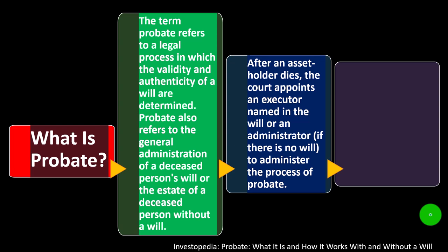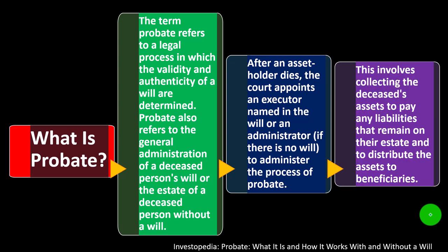If there is a will and you go through the probate court process, they determine the will is legitimate and give authority to the executor named within it. But if there is no will, the court still assigns an administrator to go through the necessary process. This involves collecting the deceased's assets to pay any liabilities that remain on their estate and then distributing the remaining assets to beneficiaries. It's essentially a balance sheet: you pay off the liabilities, and if there are more assets than liabilities, you allocate what's left to the beneficiaries.